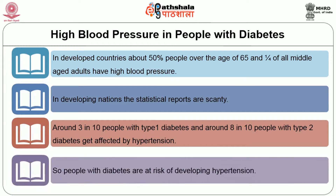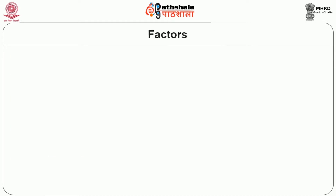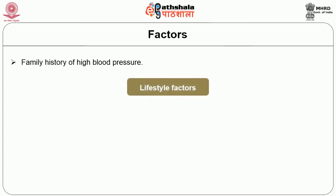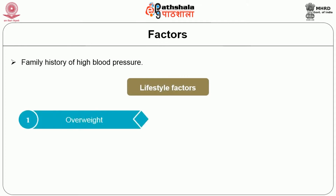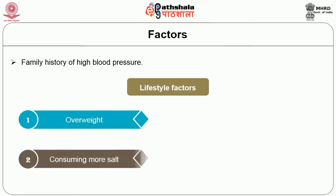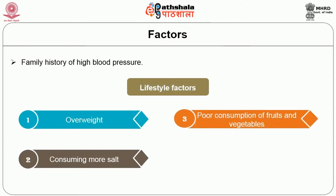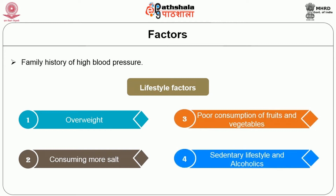People with diabetes are at risk of developing hypertension if they have the following factors: family history of high blood pressure, lifestyle factors such as overweight, consuming more salt, poor consumption of fruits and vegetables, sedentary lifestyle, and being alcoholics.